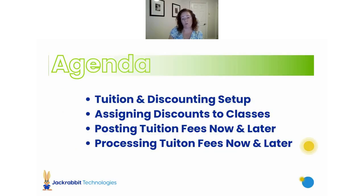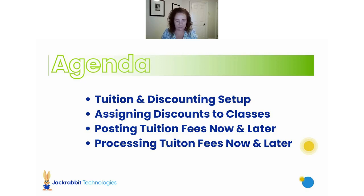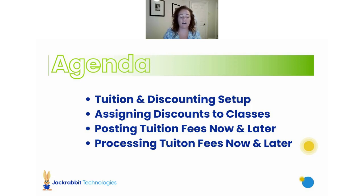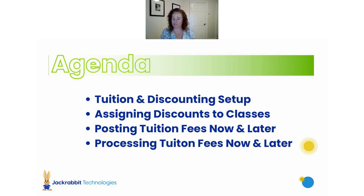So just quickly, what we will be going over today: we're going to go over your tuition and discounting setup, assigning discounts to your classes — and believe me, it is easy peasy — and then posting your tuition fees. We're going to go over posting them now and also setting up to post them later with Jackrabbit automation. After that, we're going to go over the processing of your tuition fees — you can process them now, or choose to process them later and have that automation set up for you.